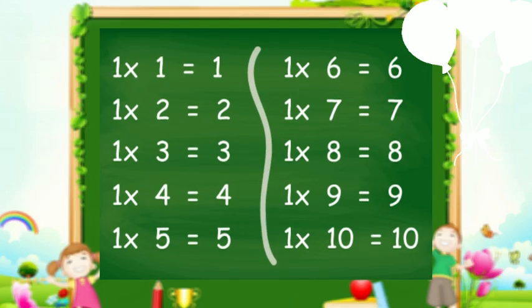1 1s are 1. 1 2s are 2. 1 3s are 3. 1 4s are 4. 1 5s are 5. 1 6s are 6. 1 7s are 7. 1 8s are 8. 1 9s are 9. 1 10s are 10.